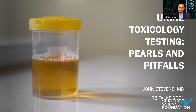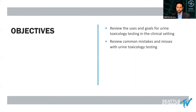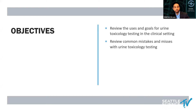I have nothing to disclose financially. I do have to disclose I have the humor of a 12-year-old boy or the father of three small children. A couple of key objectives today: we're going to be talking about the goals of urine toxicology testing in the clinic setting, and also common mistakes and misses that we make with urine toxicology testing.